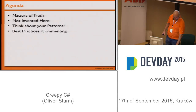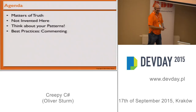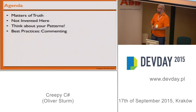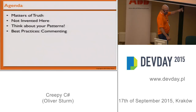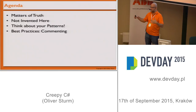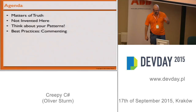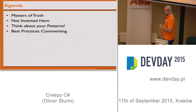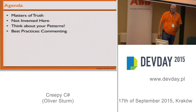Today's talk is going to be pretty funny because I've collected things people do in C# that are kind of not so cool — creepy, really. You look at code and it makes you cringe. I've got a few major blocks: 'Matters of Truth,' 'Not Invented Here,' patterns, and commenting — which we all love. Do you write lots of comments in your code?